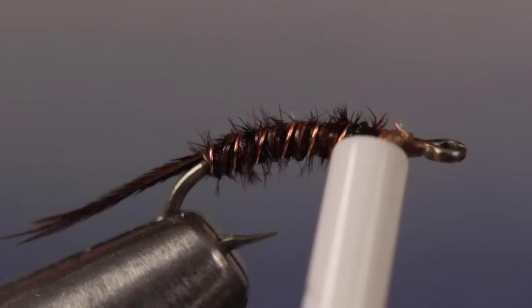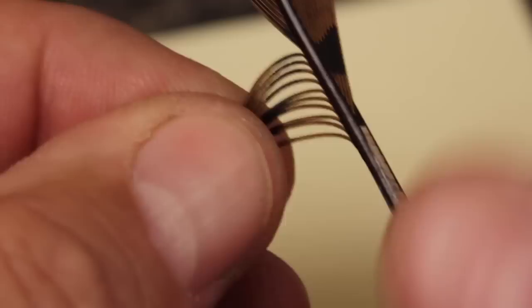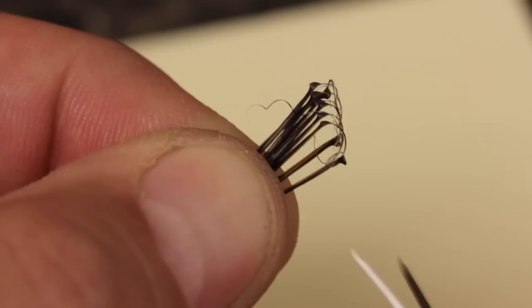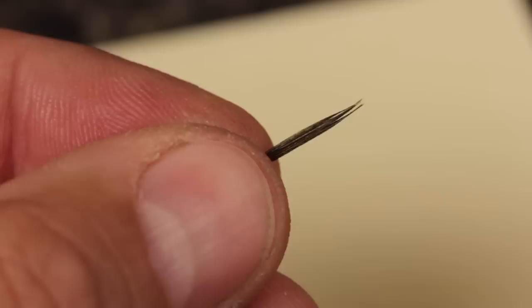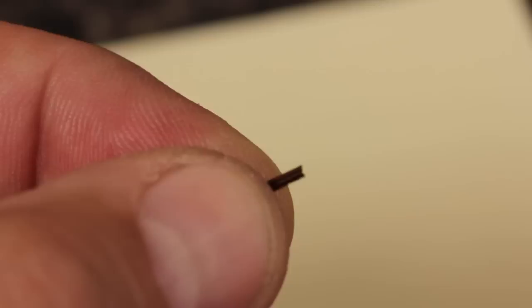Using the same pheasant tail as before, this time pull down eight to ten fibers and strip them free from the stem. Once again, cut the curlies off so they don't get in your way. Now flip the fibers around so you're holding the tips in your left hand. With your tying scissors, snip about a half inch of the brittle tips off square. Place the clump on top of the hook shank, leaving a little bit of space behind the eye.